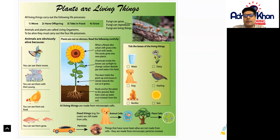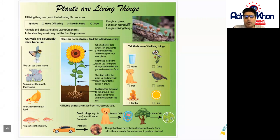All living things are made up of microscopic cells. Dead things — for example, fur coats — are still made from cells. A dog has animal cells, and you can see here what a cell could possibly look like. A plant also has cells, and you can see the cell of this particular tree here at the bottom. A car has particles.